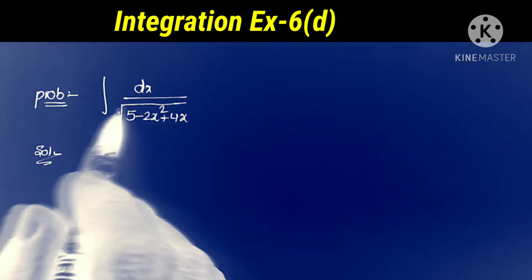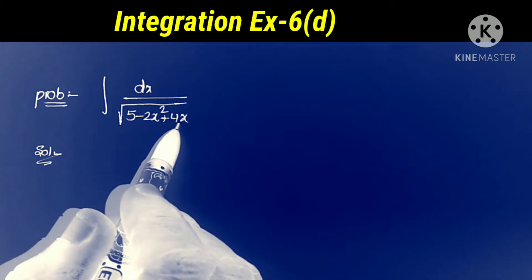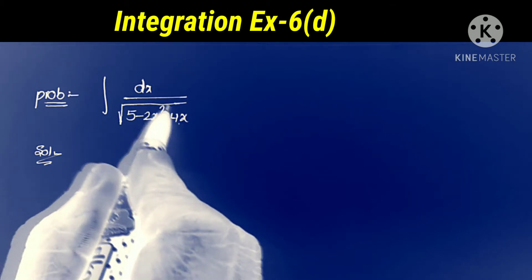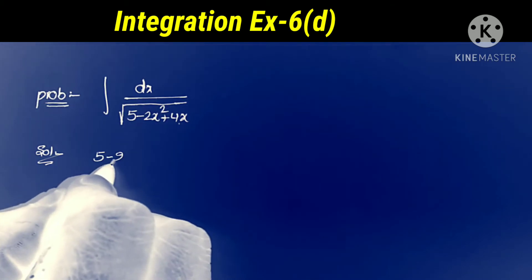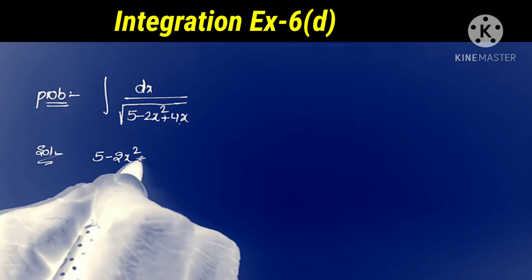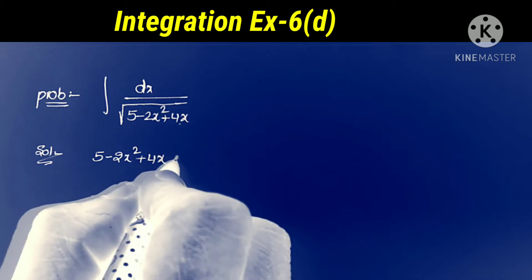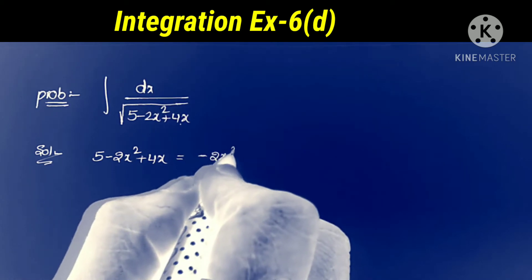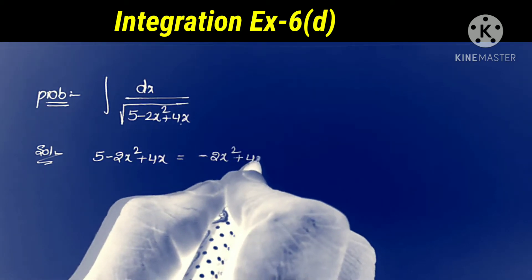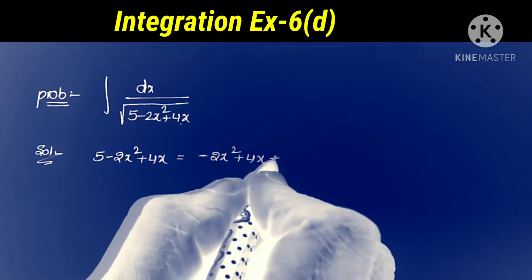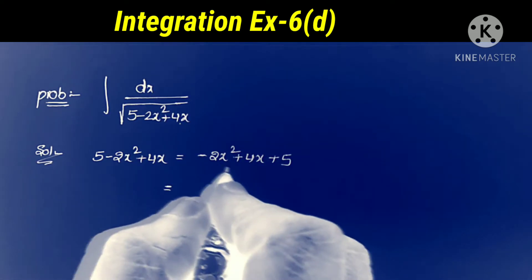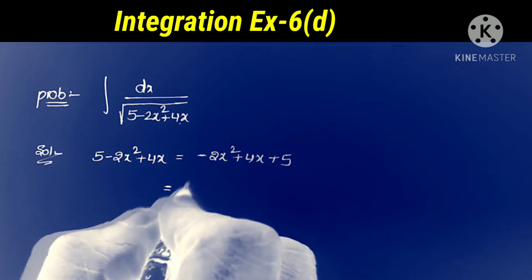First problem: integral dx by square root of 5 minus 2x squared plus 4x. To apply the formula, we first convert this term. We write the terms in order as ax squared plus bx plus c, that is minus 2x squared plus 4x plus 5.